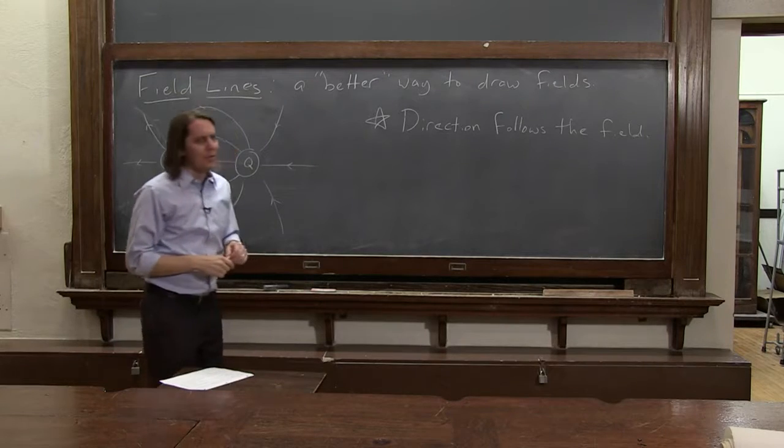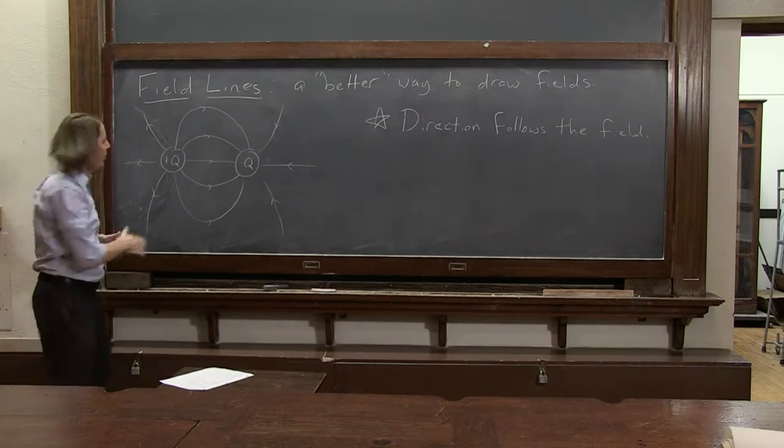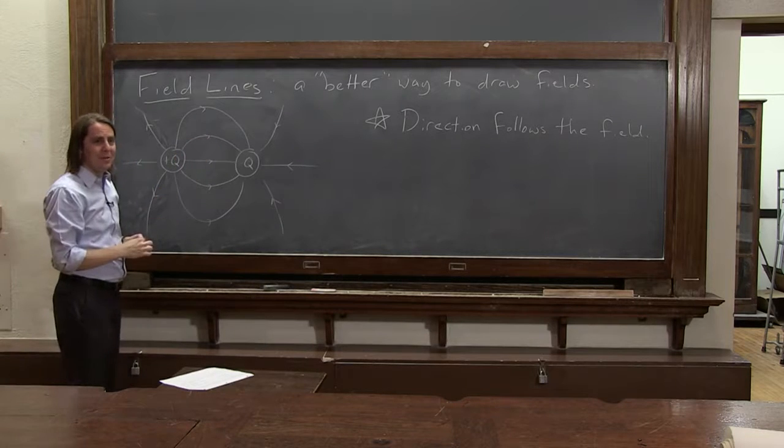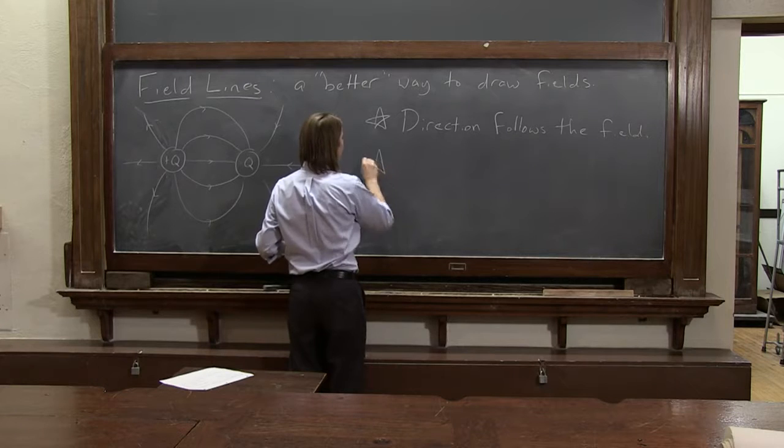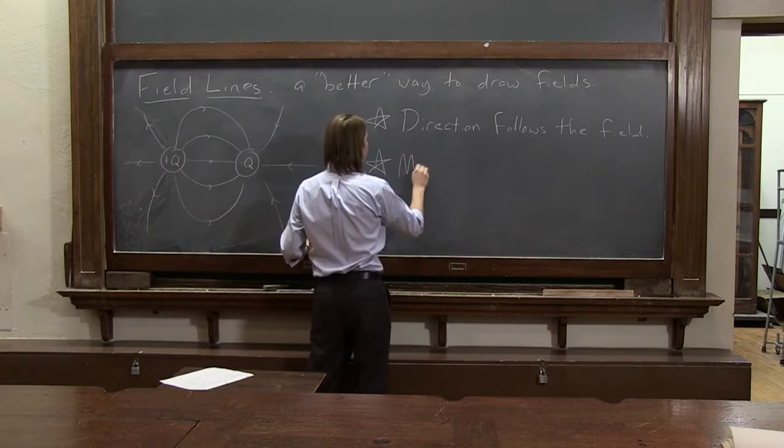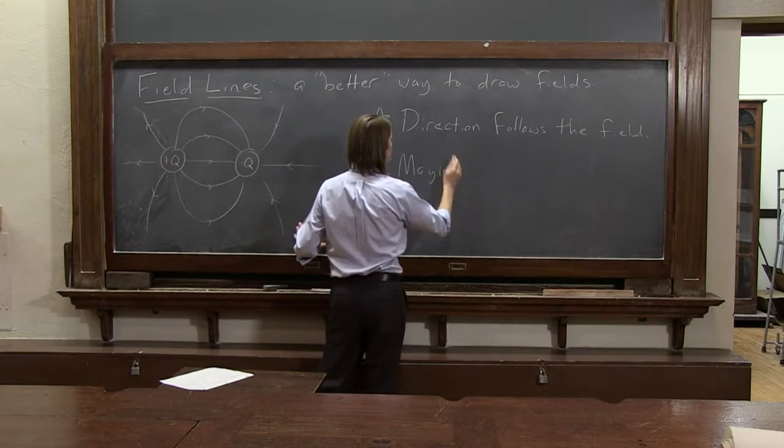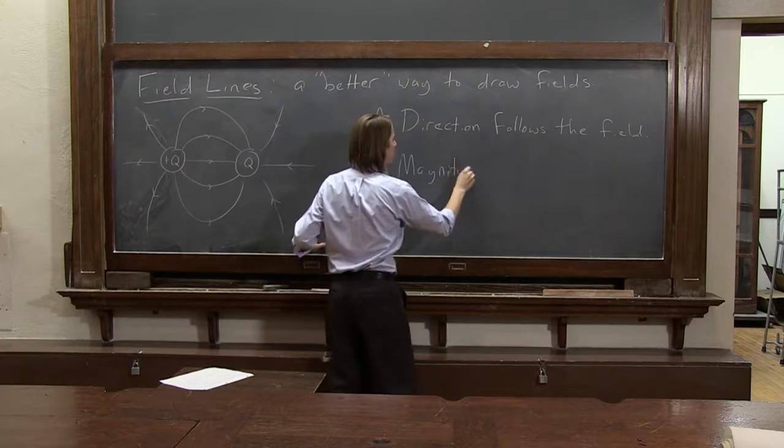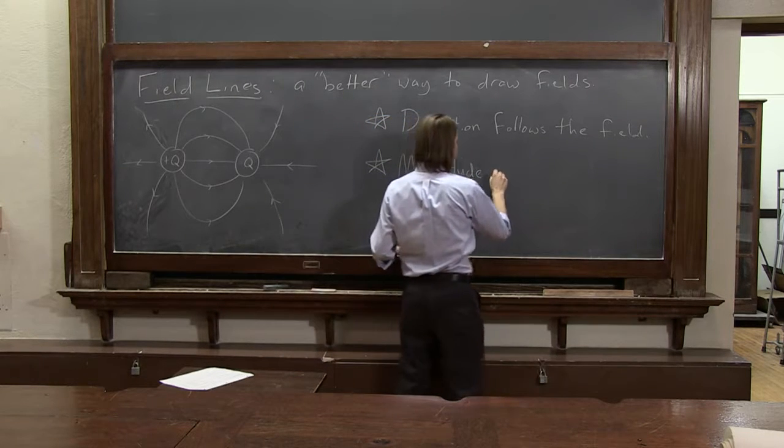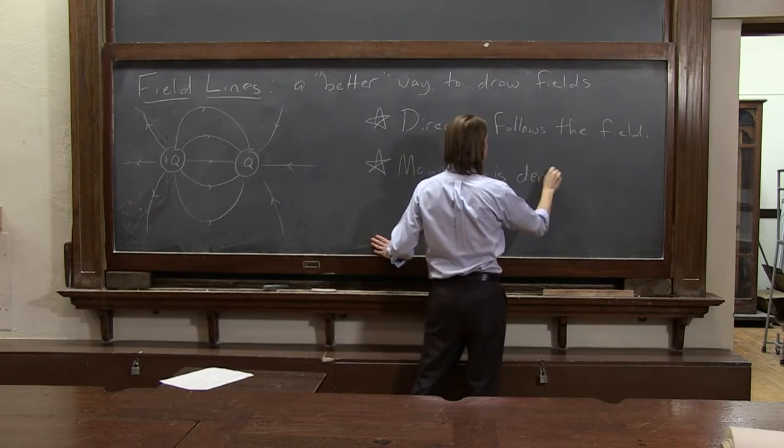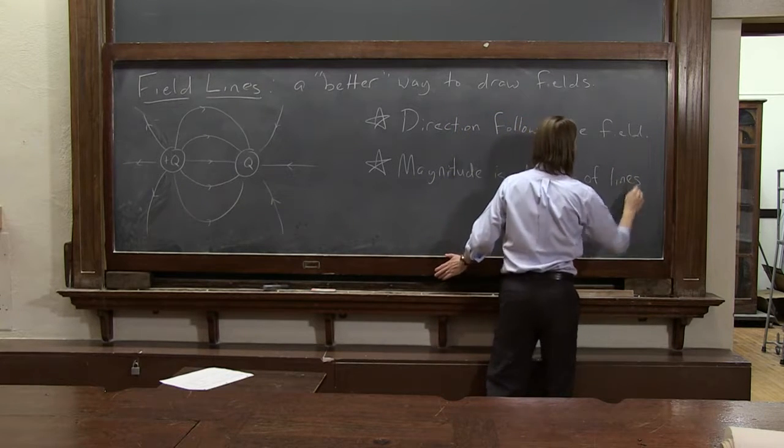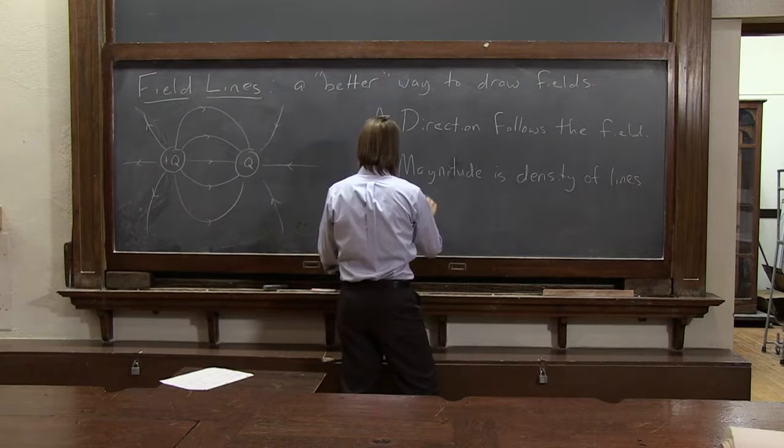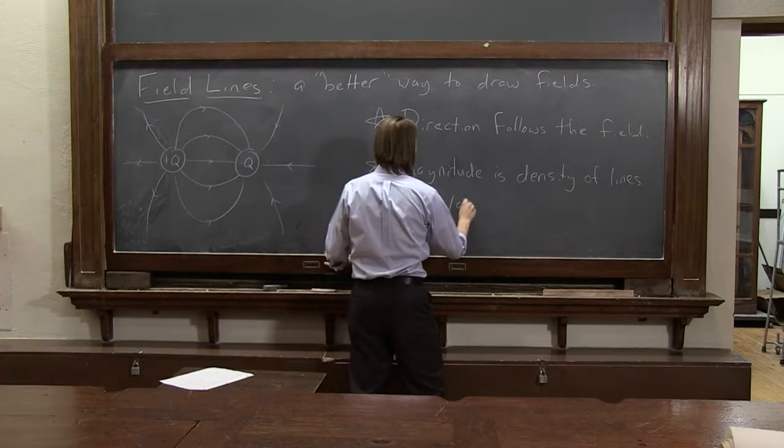Now you might say that's really no different than a quiver plot. All we've done is not break them up into individual vectors, but it is different, and the key is in the magnitude. The magnitude of the field is the density of lines. And by that, I mean the lines per unit area.